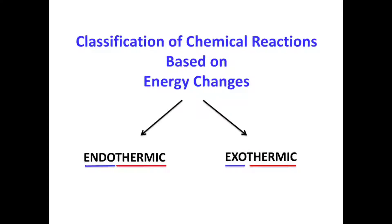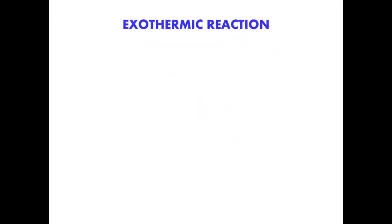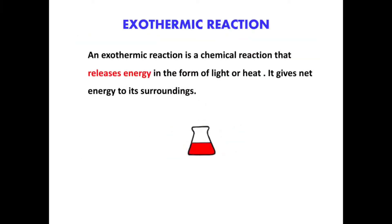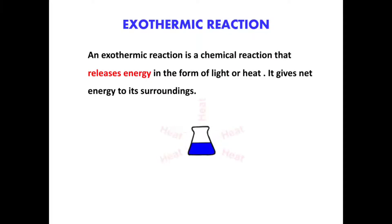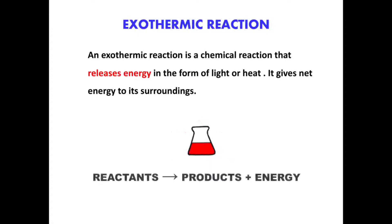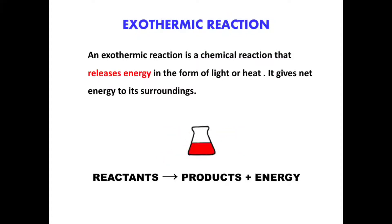I'm going to explain exothermic reactions first, because in our day-to-day life we see so many exothermic reactions taking place around us. An exothermic reaction is a chemical reaction that releases energy in the form of light or heat — it gives net energy towards the surroundings. In an exothermic reaction, the reactants undergo reaction to give products with the release of energy. Let's discuss a few examples of exothermic reactions.